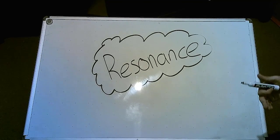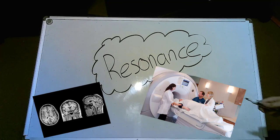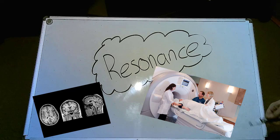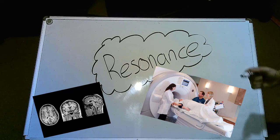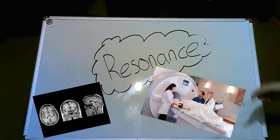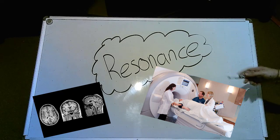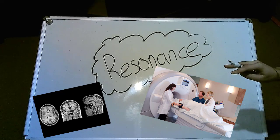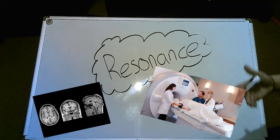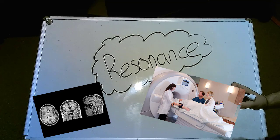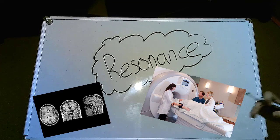Another example of where we see resonance frequency is in medical imaging. MRIs are named magnetic resonance imagers, where you are kicking the protons inside of a person's body with a radio frequency that is set to a very particular frequency, that of protons in hydrogen.